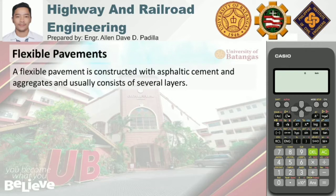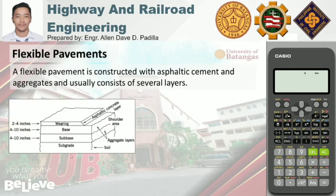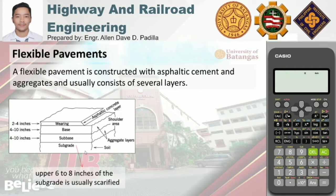Flexible pavement is constructed with asphaltic cement and aggregates and usually consists of several layers. This figure represents a section of a flexible pavement with four layers. The bottommost layer is the subgrade or the soil — that is the actual soil where the pavement will be placed. It is usually scarified; its upper 6 to 8 inches is scarified and blended to achieve uniform material before it is compacted, improving its engineering property.